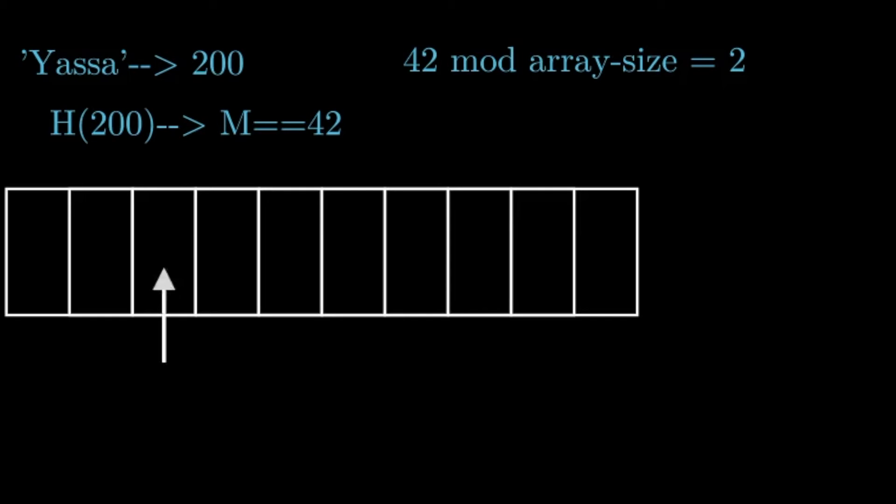That value will simply be the index of our array, and then we can index that using an O of one time complexity. Therefore, making it the most efficient possible solution.